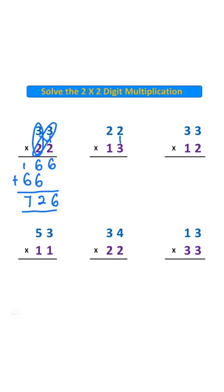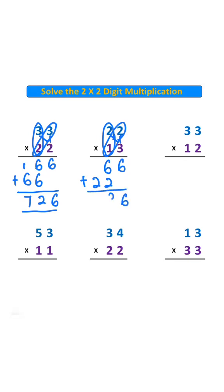2 times 3 is 6. 2 times 1 is 2. 6 plus 0 is 6. 6 plus 2 is 8. 0 plus 2 is 2. Answer is 286.